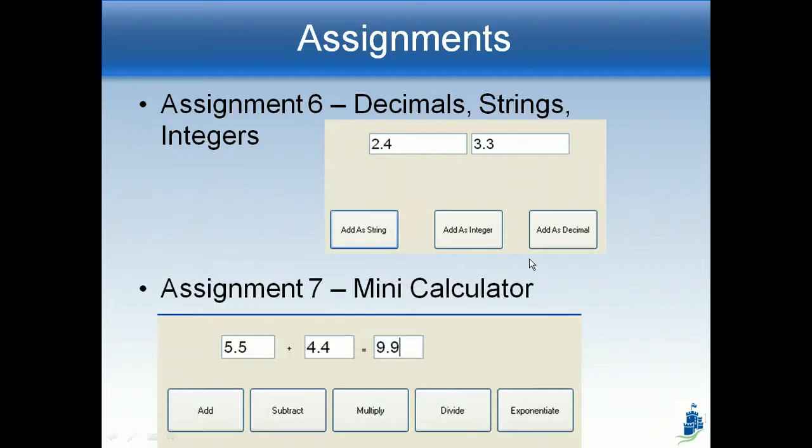And then assignment seven, we're going to make a little mini calculator. And we're going to have three text boxes. One is the first number, one is the second. And then one is where the answer goes. And then you press any one of these buttons and the mathematical operation happens. So for example, if I put 5.5 and 4.4 in here, and then I hit add, 9.9 should show up there because that's what 5.5 plus 4.4 is. We're adding them. You also notice there's a plus sign here. If I hit multiply, it should multiply these two numbers together and give you the answer in this box. And it should also change this plus sign to a multiplication sign. Good luck with that one. That one's going to be fun.